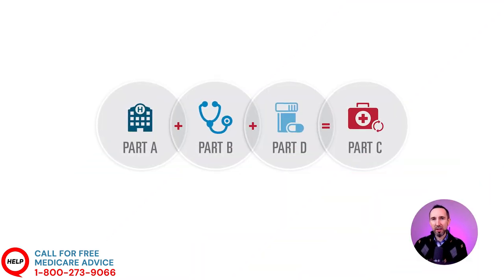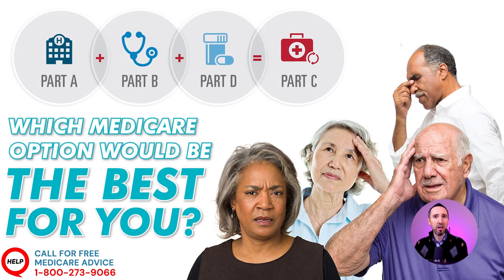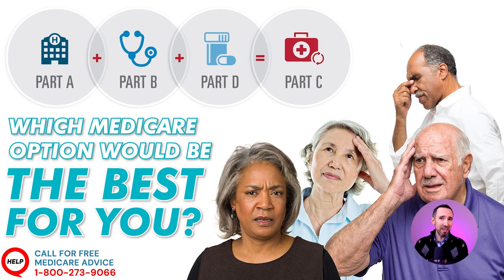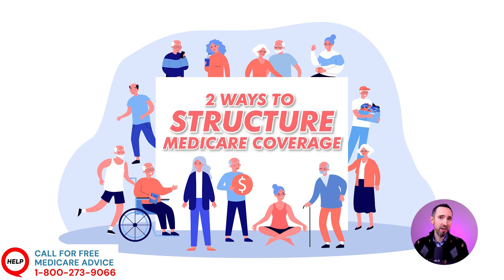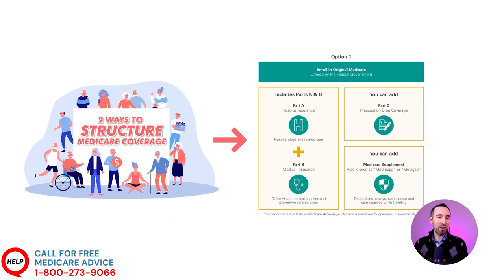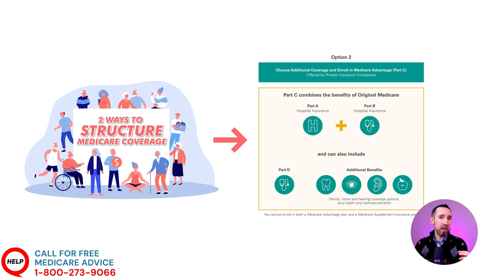Assuming you qualify for Medicare, the first step is to figure out which option is best for you. There are two common ways people structure their coverage. The first is sticking with Original Medicare Part A and Part B, with the choice of adding Part D prescription coverage and/or a Medicare supplement plan. The second is switching to a Part C plan, which completely replaces Original Medicare and is known as a Medicare Advantage plan.